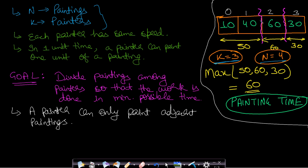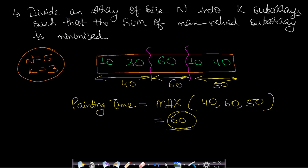I have taken an example with four paintings (n=4) and three painters (k=3). In the most optimal division, the first painter paints two paintings in 50 units of time, the second painter in 60 units, and the third in 30 units. The total work is done in the maximum of these three values — 60 units — since the painters work in parallel. A single painting cannot be shared among painters. The problem reduces to: divide an array into k partitions such that the maximum subarray sum is minimized.